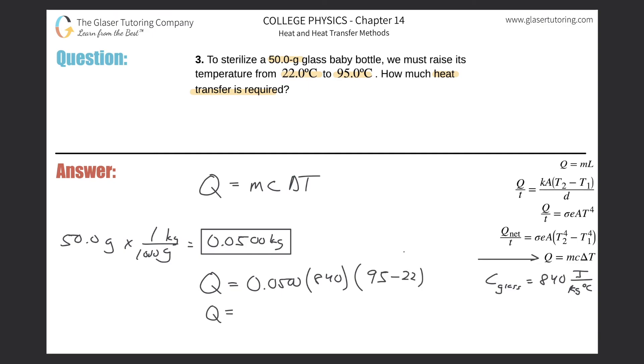Notice how this is going to work out to be a positive value. Anytime Q is positive, that means heat is being gained. If it's negative, that means heat is being lost. It's that simple.